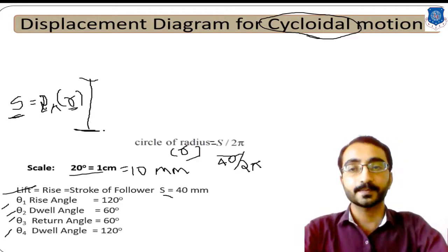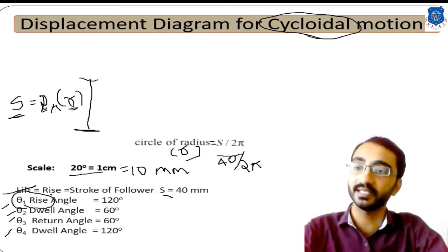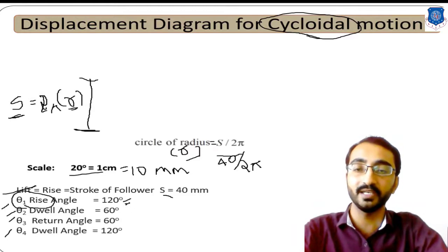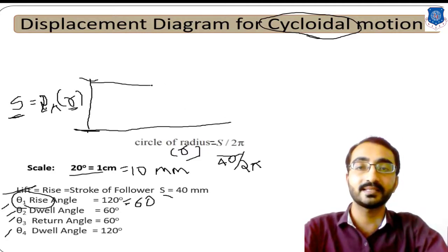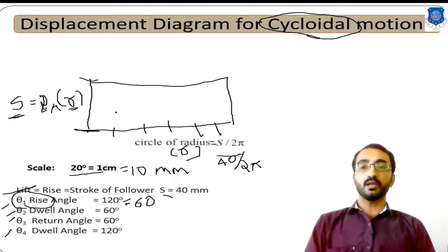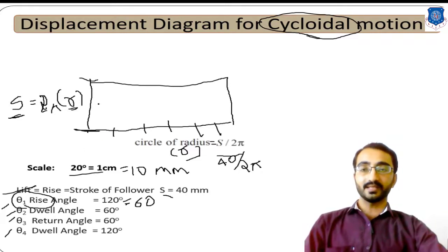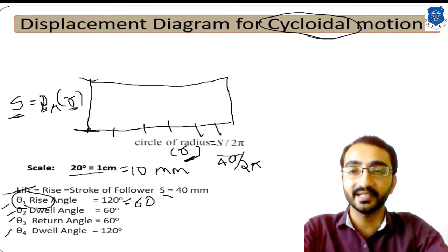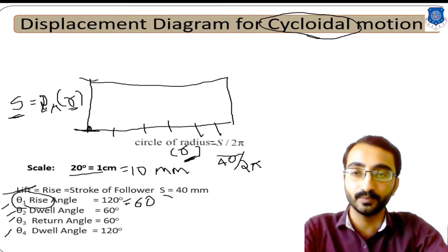To sketch the displacement diagram for cycloidal motion, start with theta 1 — the rise angle of 120 degrees, represented by 60 mm at our scale. Draw a 60 mm line and divide it into 6 equal intervals of 10 mm each. Then sketch a circle with radius r = s / (2π), using the initial starting point as the center, representing the circle rolling on the vertical stroke line.